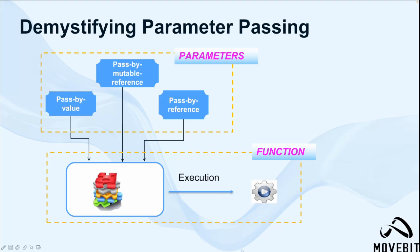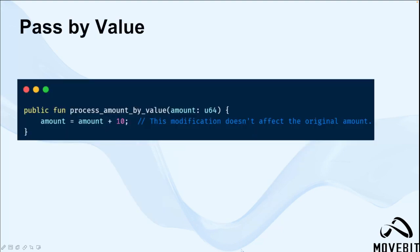As we have mentioned, pass by value. In this method, a copy of the argument value is created and passed to the function. The original value remains unchanged regardless of any modification made within the function. And let's see the code example here. In this example, the process amount by value receives a U64 type parameter amount. It then tries to increment it. However, since the amount is passed by value, the modification doesn't affect the original amount.